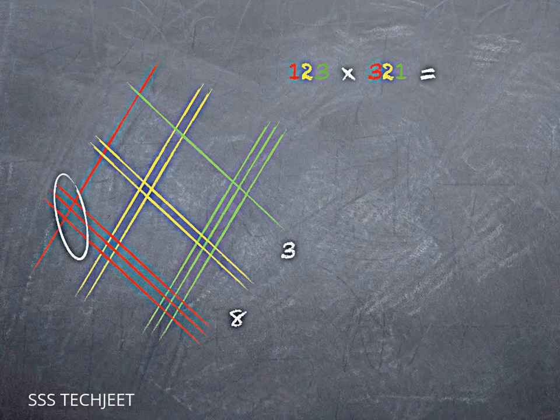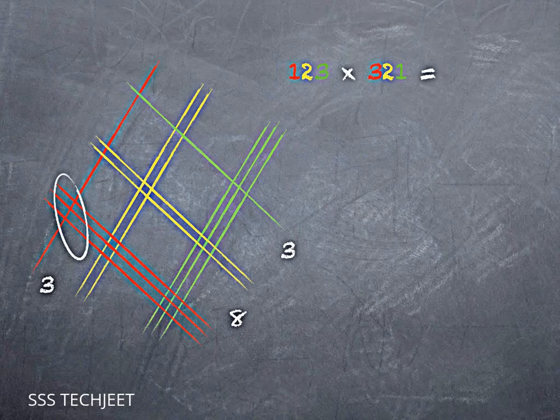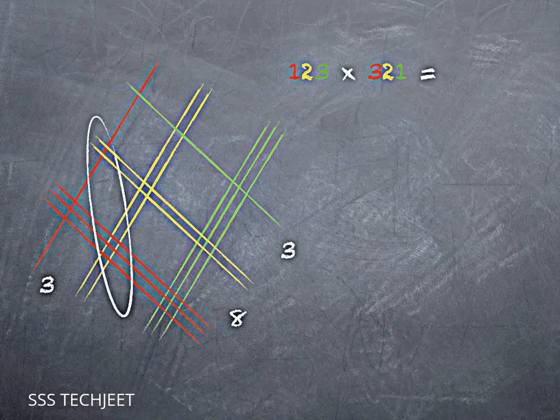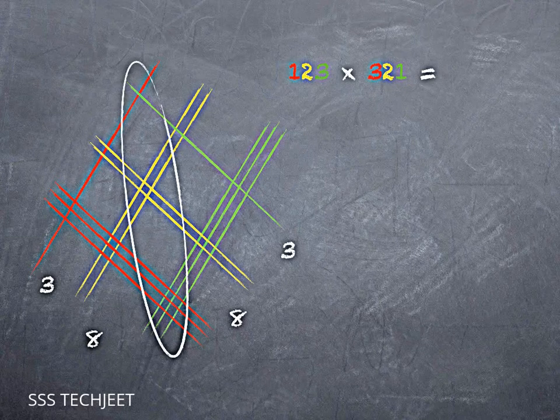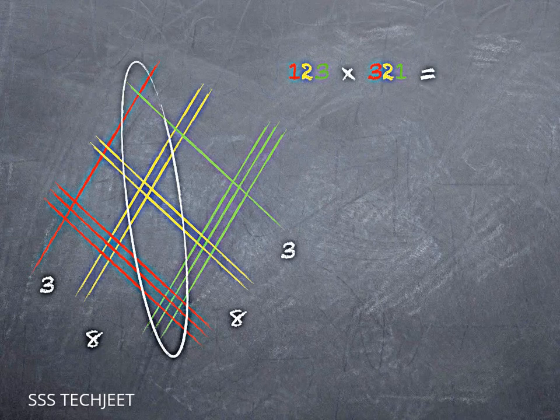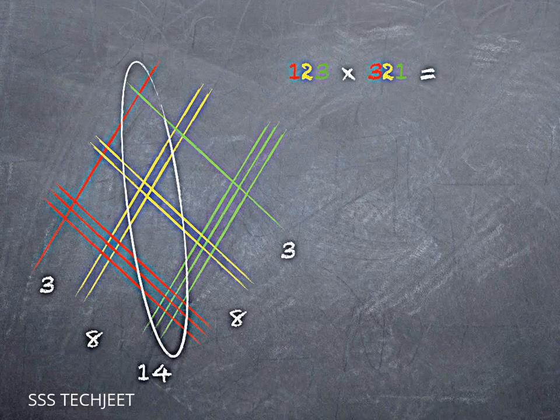On the left, I get three intersections, but that's hundreds and hundreds, which gives me ten thousands. So three goes in the ten thousands place. Now I have red and yellow, so that's hundreds and tens, which is going to give me thousands. If you count them up, there are eight of those. And in the middle, I either have red intersecting green, which is ones and hundreds, or I have yellow intersecting yellow, which is tens and tens. Either way, that's the hundreds place. And if you count them up, you wind up with 14 hundreds.